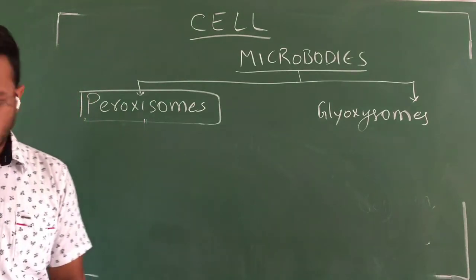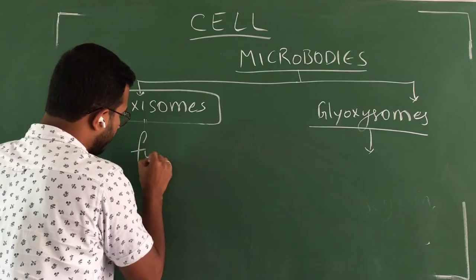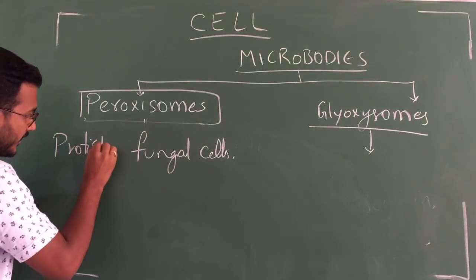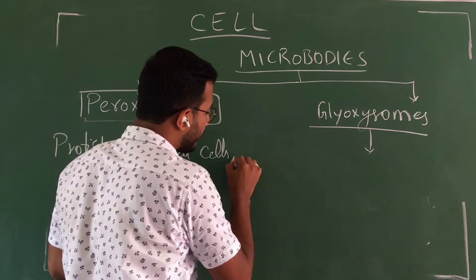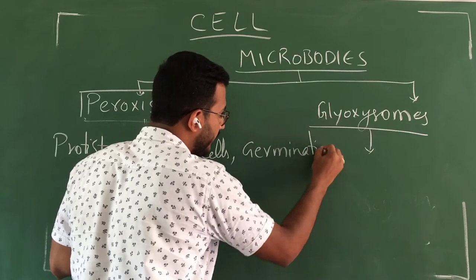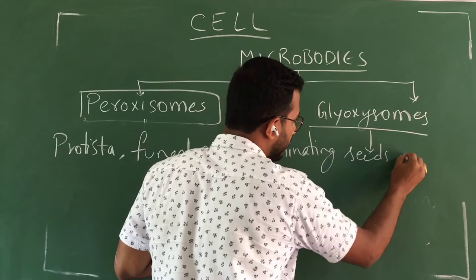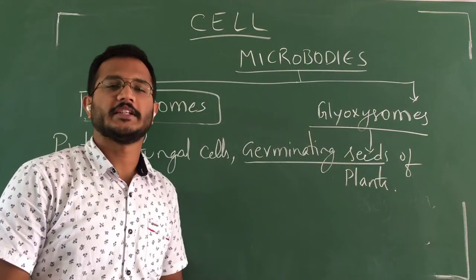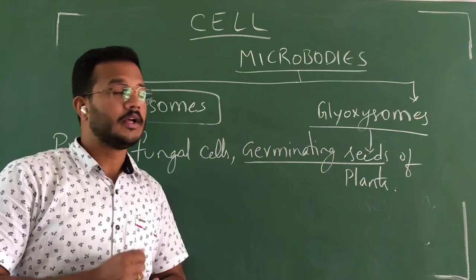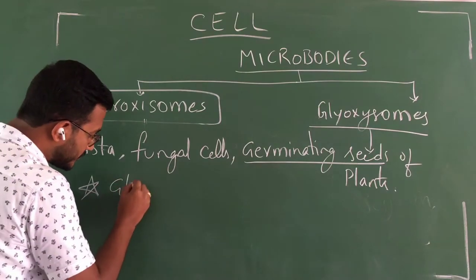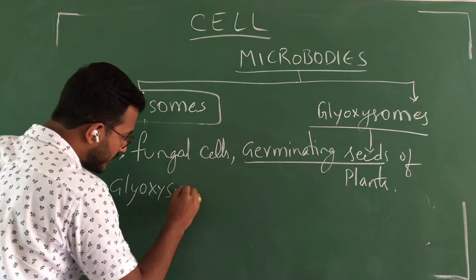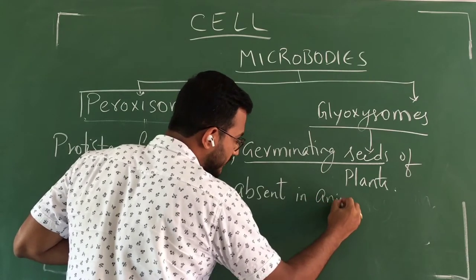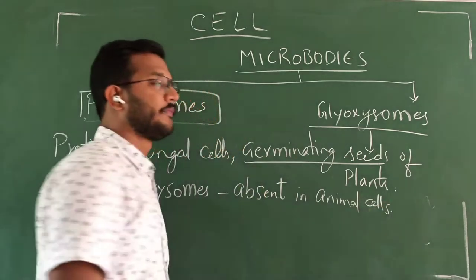Glyoxysomes are present in fungal cells, some protista, and in germinating seeds of higher plants. We have to observe the point: germinating seeds. These are present in those cells only. Higher plants mostly do not have glyoxysomes. One more important point is that glyoxysomes are absent in animal cells — this is one of the most important points.